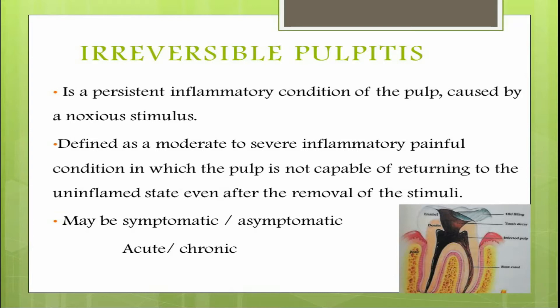Irreversible pulpitis may be classified into symptomatic and asymptomatic, and another term that can be used is acute and chronic. Both may be used interchangeably because in any disease, an acute stage is characterized by severe symptoms, whereas in the chronic stage the disease will be asymptomatic, or even if symptoms are present they will be mild in nature.